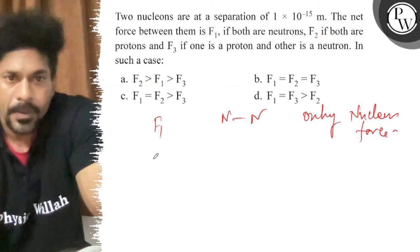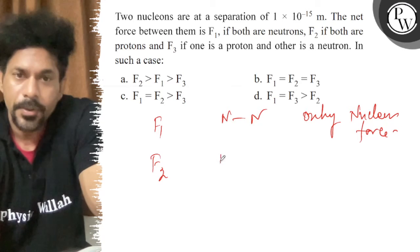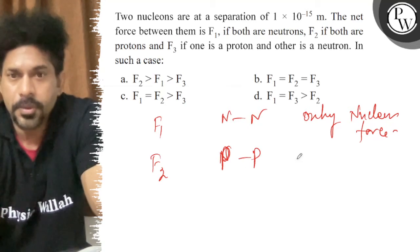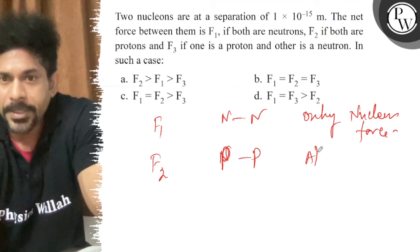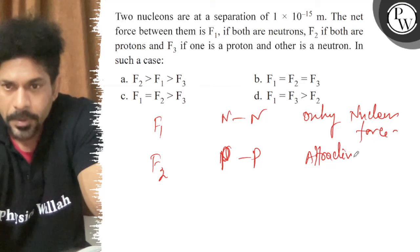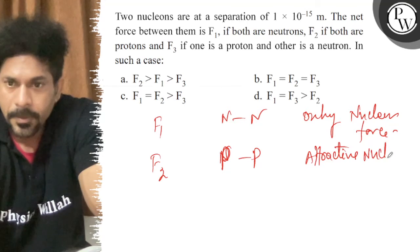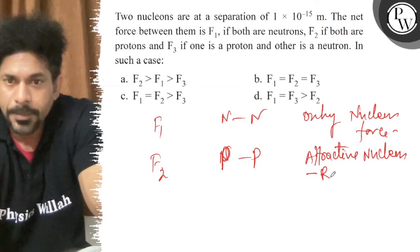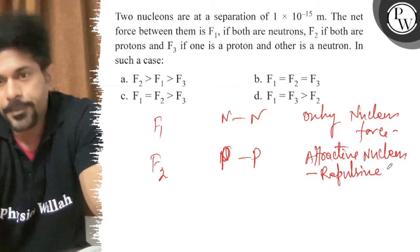F2, proton-proton, so superposition: attractive nuclear force minus repulsive Coulomb force.